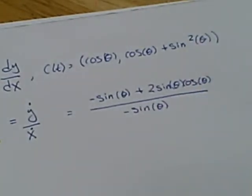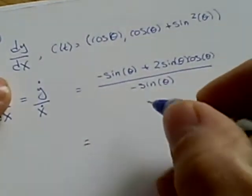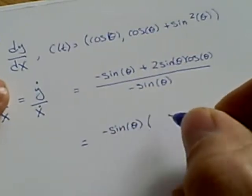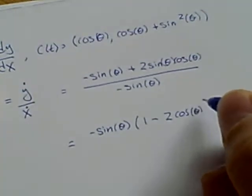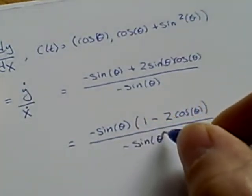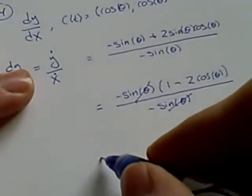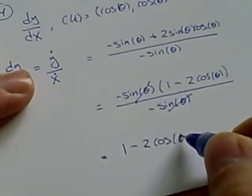Now, you can be certain that won't be one of the options, because we can simplify this. We can pull out a minus sin θ, leaving a 1 minus 2 cos θ over a minus sin θ. And we could cross those out, leaving 1 minus 2 cos θ.